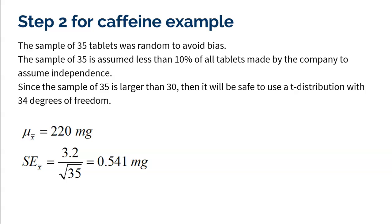Step two is checking those conditions. The sample must be random. The sample must be under 10% of the population to assume independence. Now, a lot of kids ask about that second condition being under 10% of the population.